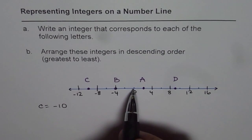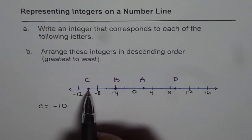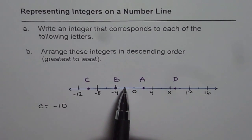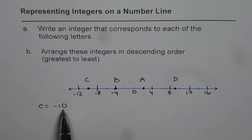As we move left, it is minus 2. So let us see whether C is really minus 10 or not. So if I move from 0, minus 2, minus 4, minus 6, minus 8, minus 10. So that is correct.